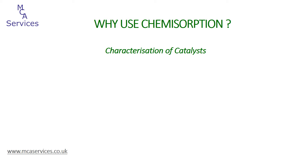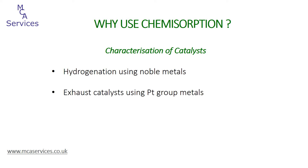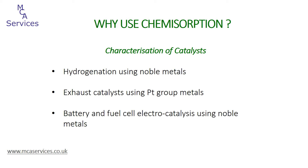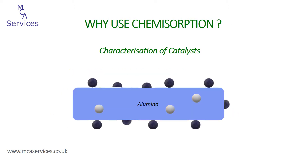Just a few examples: noble metals for use as hydrogenation catalysts, platinum group metals used in exhaust catalysts, and noble metals — quite often mixed noble metals — used in battery and fuel cell electrocatalysis. Catalysts often take the form of an active metallic component, for example a noble metal or a precious group metal, doped onto an inactive support material, for example alumina, silica, or zeolite.